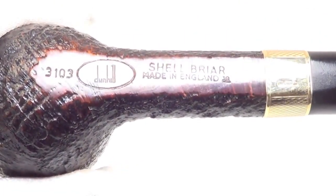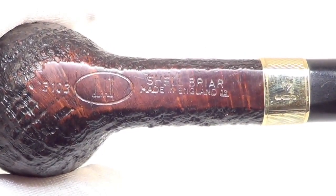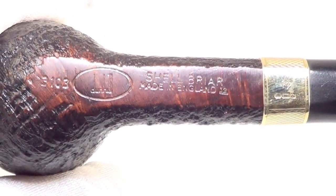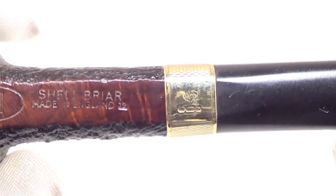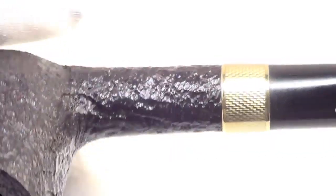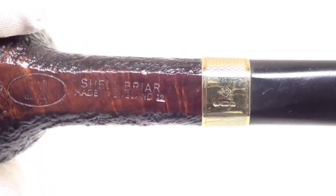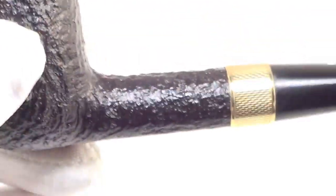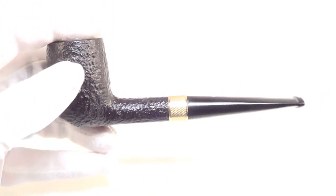The pipe is marked Shell Briar, made in England 39, Dunhill 3103. The hallmarks on that beautiful gold band. So this is a solid gold original band from Dunhill.